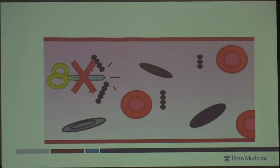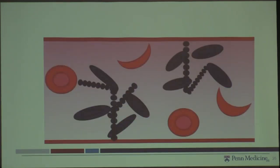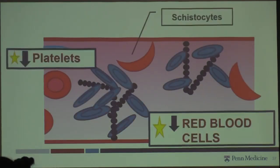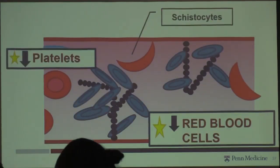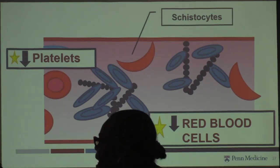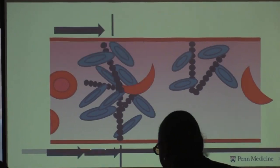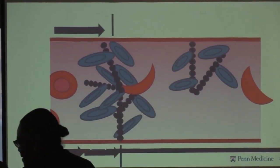When you have a deficiency of your scissors — when you have ADAMTS13 deficiency — those von Willebrand molecules aren't cut apart like they're supposed to be. The platelets get caught up in them, and as blood tries to flow through the vessels you get a shearing effect where red blood cells get broken apart. That's what causes thrombotic thrombocytopenic purpura: low platelets caught up in von Willebrand factor, and fragmented red cells called schistocytes, which cause the anemia.